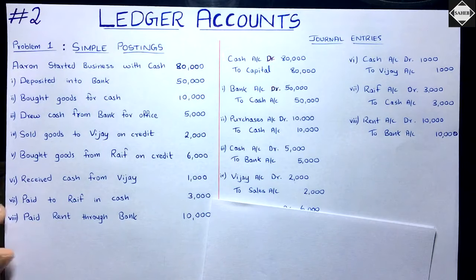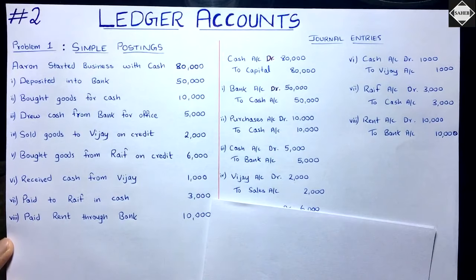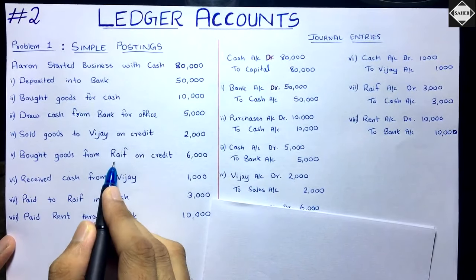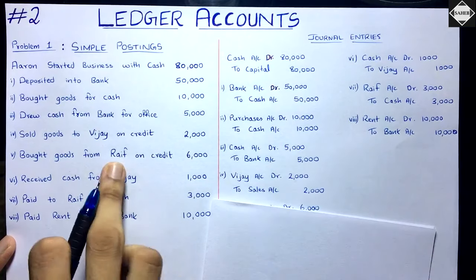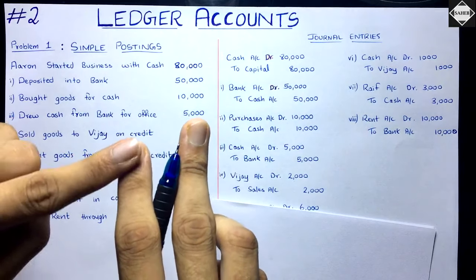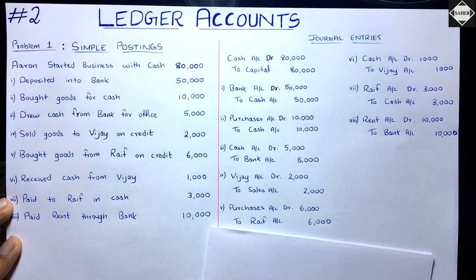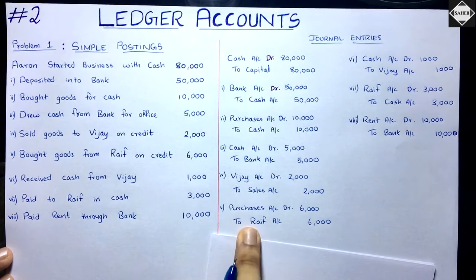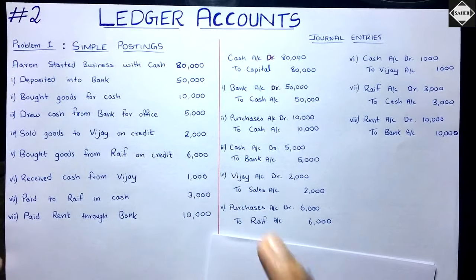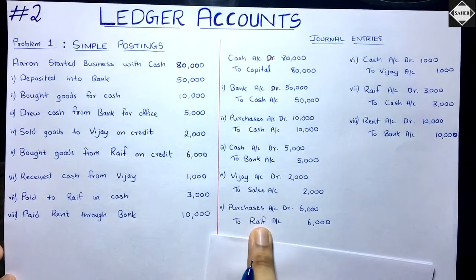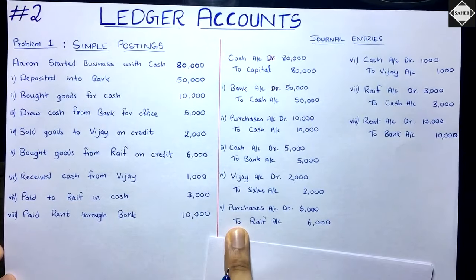Next: bought goods from Rife on credit 6,000. Rife is your creditor — your payable — because you haven't paid anything and you have to pay him in future. Liability is increasing, so Rife Account is increasing. Purchases are also increasing, as expense is increasing. So the entry is: Purchases Account debit 6,000, to Rife Account 6,000. Rife is a future obligation, a liability, so you credit his account.